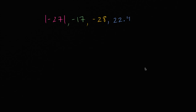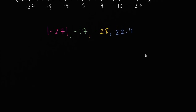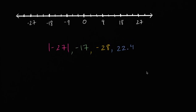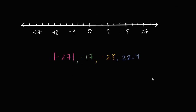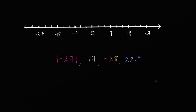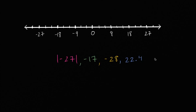I encourage you to pause the video and try to work through it on your own. So I'm assuming you've had a try at it. The easiest way I can think about it is, let's just plot them all on a number line. You might want to draw it out, or eventually you kind of have a number line in your head and you can think about it that way.